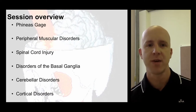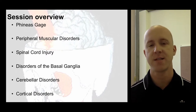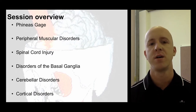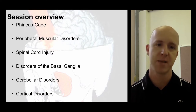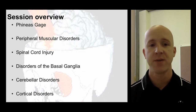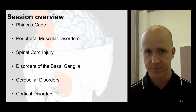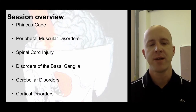We're going to start by talking about Phineas Gage, which is the famous case of brain injury leading us to believe that particular parts of the brain do particular jobs. We'll then go through the peripheral system and look at disorders that affect the periphery, work our way up through the spinal cord, the central nervous system, into the basal ganglia, the cerebellum, and ultimately cortical disorders — the highest level of function we have in our brain.